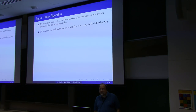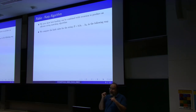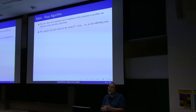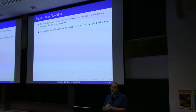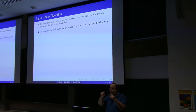The idea is that you first compute the hash value for the string that you are looking for — that would be string B. Then you compute the hash value of each substring of the long string that is of the same length. Only if the hash values match, you then double-check letter by letter by brute force whether these two strings are in fact equal. For this to make sense, the hash function has to be computable in an extremely efficient way — computing the hash value of a string should not take more time than comparing it letter by letter with string B.